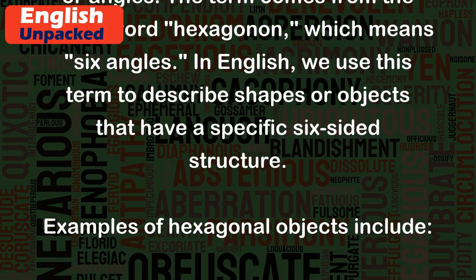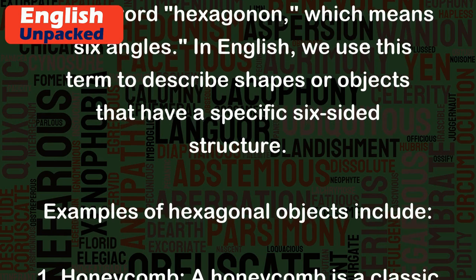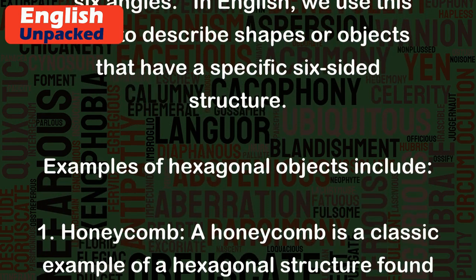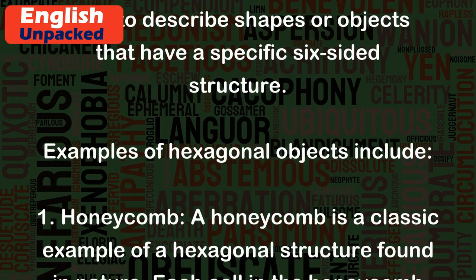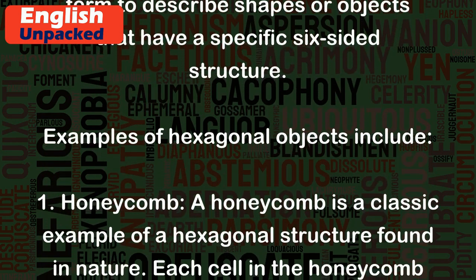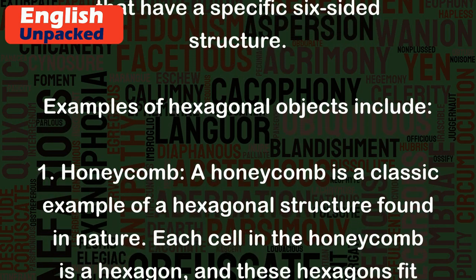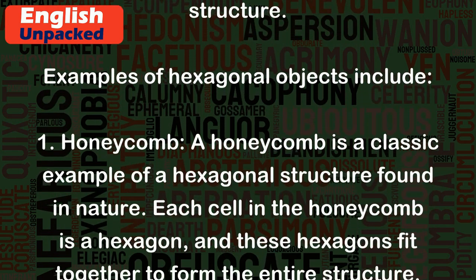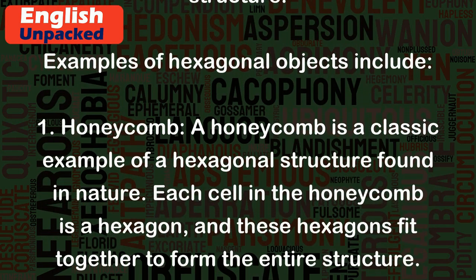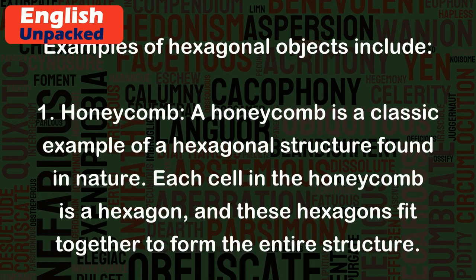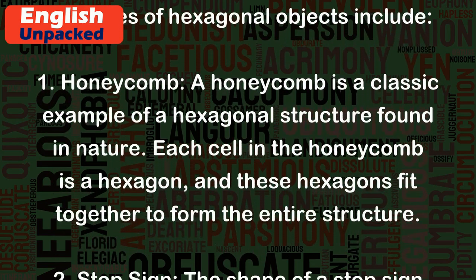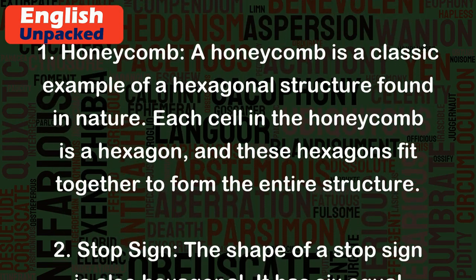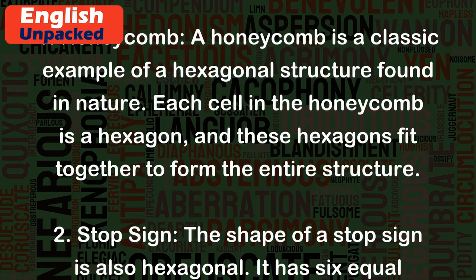Examples of hexagonal objects include: one, honeycomb. A honeycomb is a classic example of a hexagonal structure found in nature. Each cell in the honeycomb is a hexagon, and these hexagons fit together to form the entire structure.